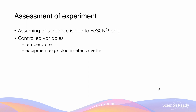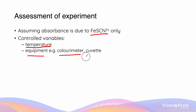When we assess the experiment, we need to consider a couple of things. One assumption is that the absorbance is due only to the iron thiocyanate, which is justified because we blanked the solvent earlier. We're also assuming that our variables were controlled, such as temperature, the same equipment, the same colorimeter, and the same cuvette.